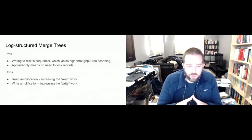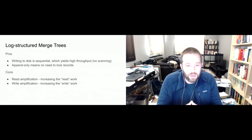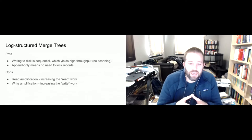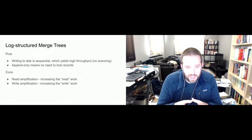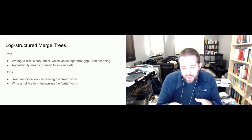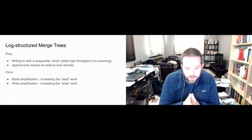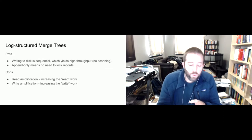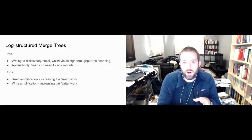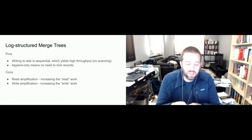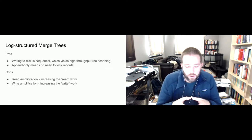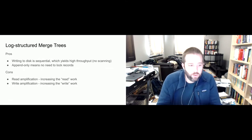The two cons associated with this data structure are what are referred to as read amplification and write amplification. In a zero amplification setting, a read request generates a single read. With read amplification, a read request generates multiple reads — some additional overhead. Similarly, with write amplification, a single write will possibly generate more writes. We'll see how this occurs in Cassandra.